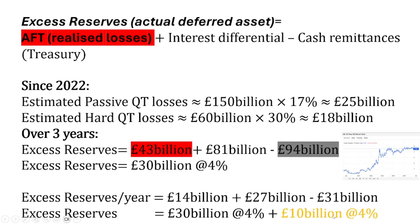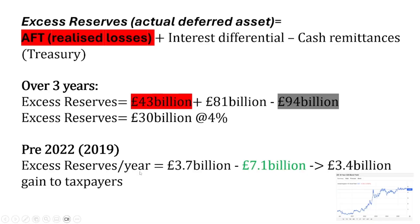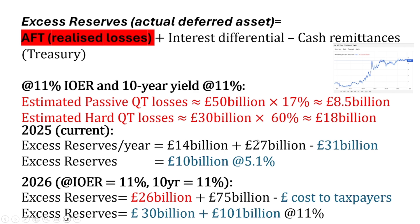You might wonder if 10 billion a year increase seems manageable. Pre-2022, the central bank ran a profit, meaning the interest differential would offset realized losses and cash was remitted to the treasury — taxpayers actually received money from the central bank. But since 2022, both the interest differential losses and realized losses now work together to increase reserves in the system and costs for taxpayers. This is a big problem because both move in the same direction when interest rates go higher: as yields go higher, hard QT losses increase — from 30% to 60% — and the interest on excess reserves gets bigger too. Both the interest differential and realized losses grow together, and the cost to taxpayers goes up quickly. The total is 131 billion and it compounds if not paid off each year.